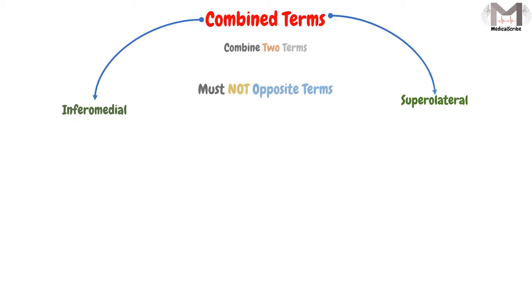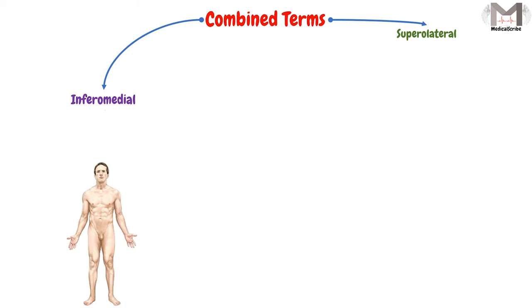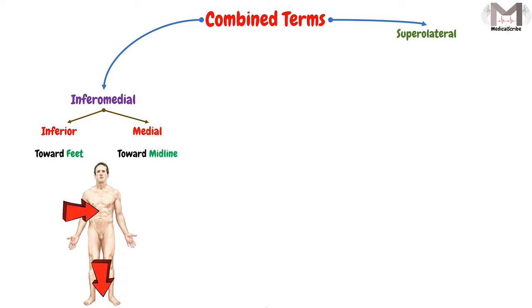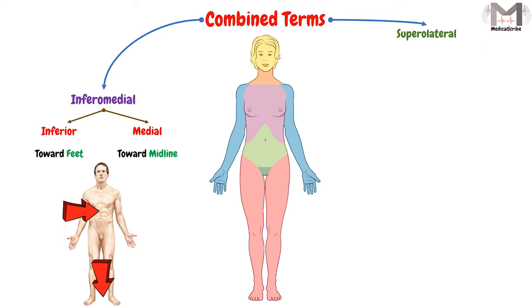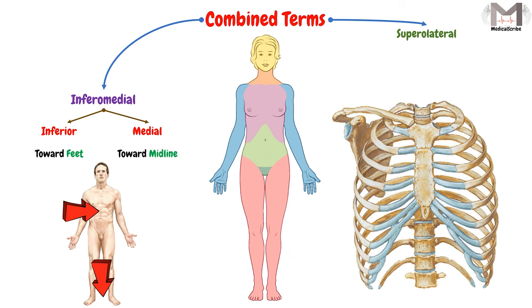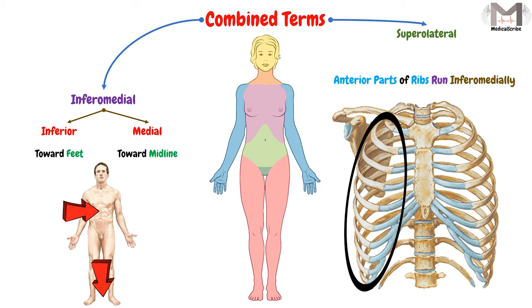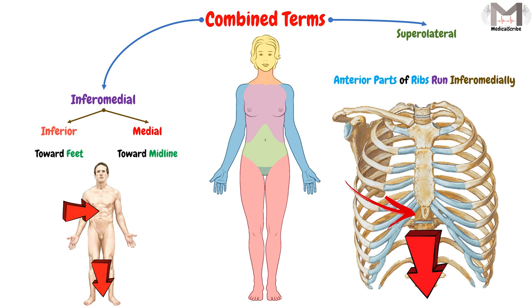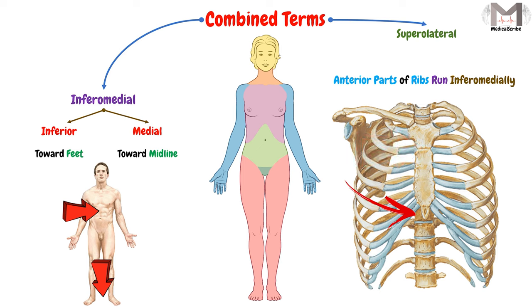Let's talk about the inferomedial firstly. This term is composed of two terms: the inferior, which means towards the feet, and the medial, which means towards the midline of the body. So we can conclude that a structure described with this term will run towards the feet and towards the midline of the body at the same time. For example, if we say the anterior parts of the ribs run inferomedially, that means they pass towards the feet and towards the midline of the body at the same time.